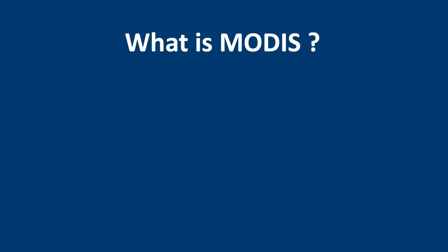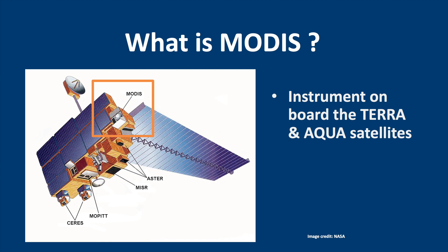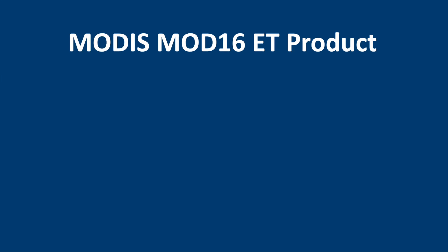We will be using MODIS data, so a few words first about MODIS. MODIS is not a satellite. It is actually one of several instruments on board of the Terra and Aqua satellites. The Terra satellite was launched in 1999 and the MODIS data from Terra always starts with MOD. The Aqua satellite was launched in 2002 and the MODIS data from Aqua always starts with MYD. We will be using the Terra satellite MODIS data, MOD16.